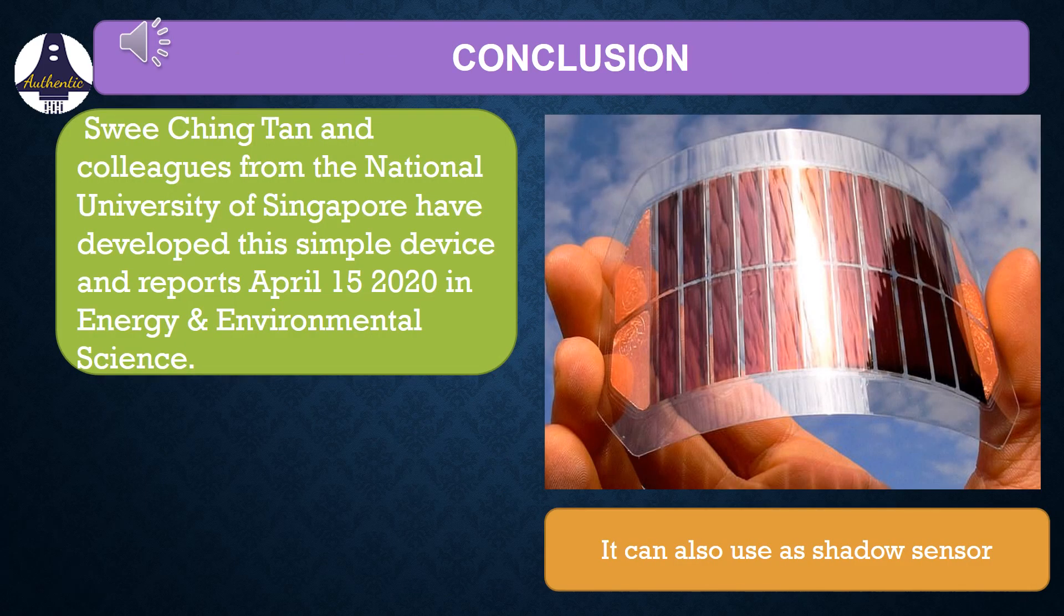The shadow effect energy generator was first developed by Swee Ching Tan and his colleagues from the National University of Singapore. And this was reported on April 15th, 2020 in the Journal of Energy and Environmental Science under Royal Society of Chemistry.